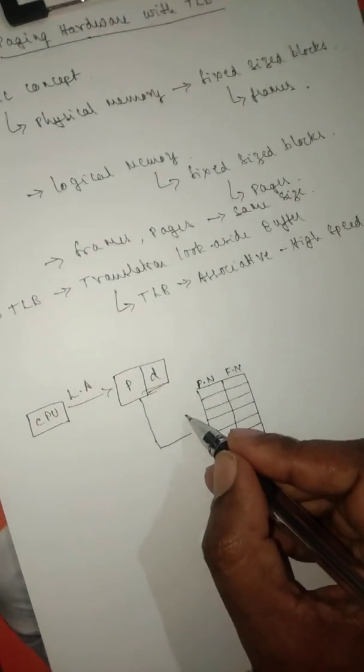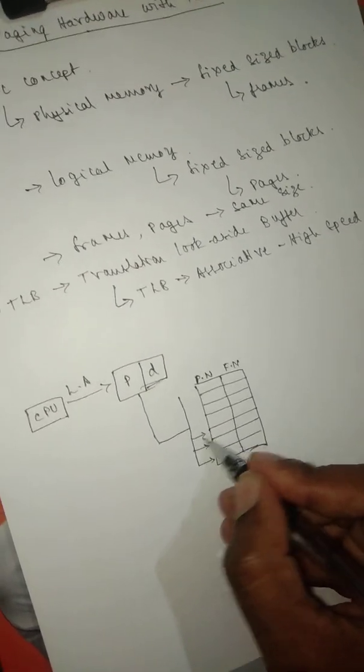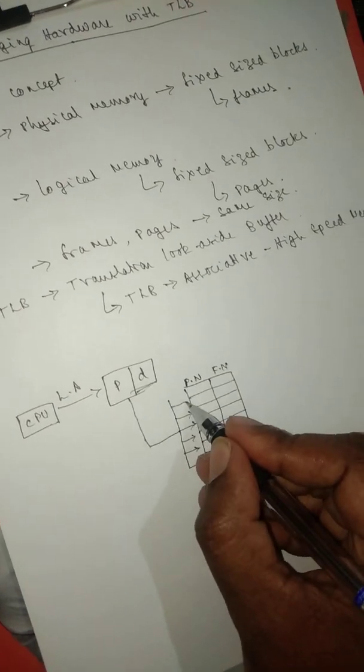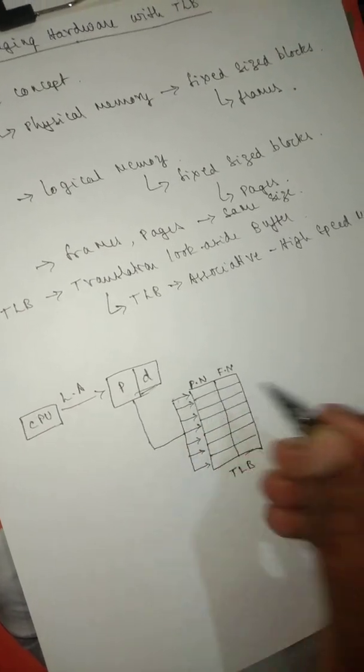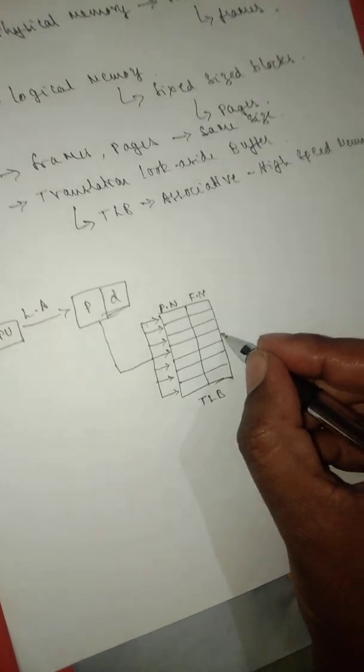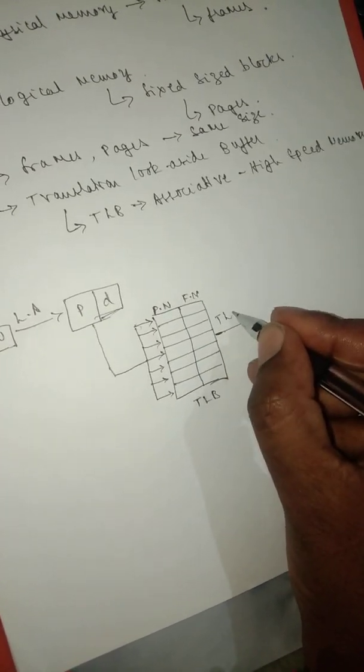Here the searching is parallel—that is the specialty of the searching technique using this TLB. If you access a particular frame, we call it a TLB hit.